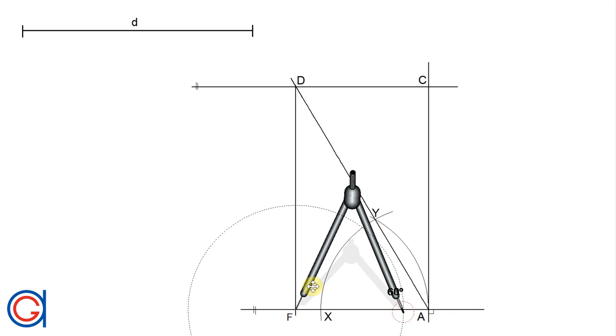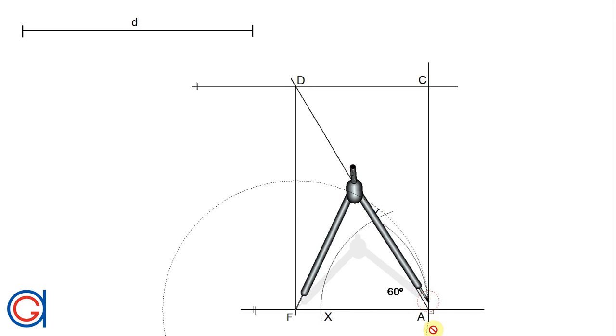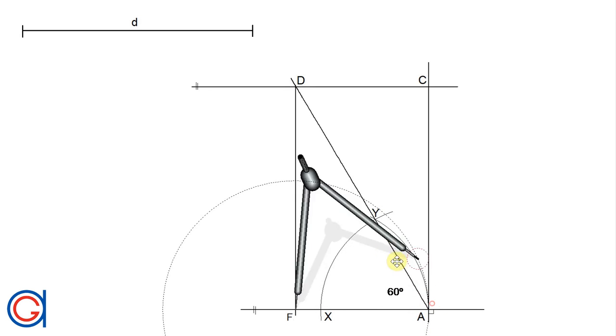Now to get the last two vertices, we set the compass to the length of the hexagon, which is F A. This is the length of the side of the hexagon.